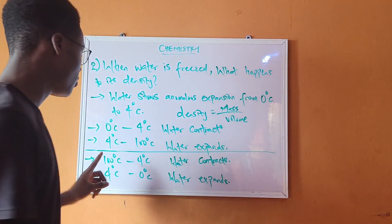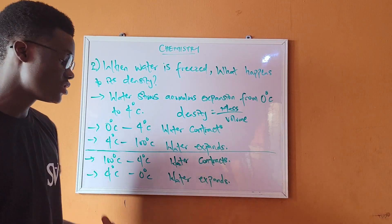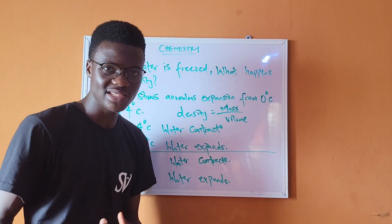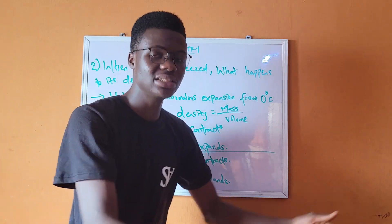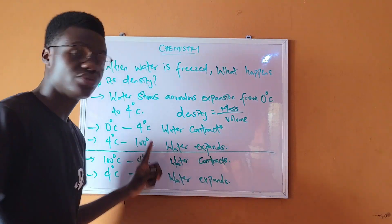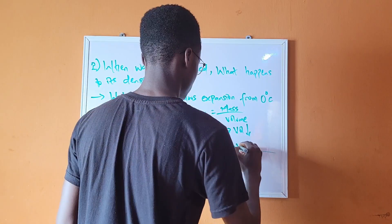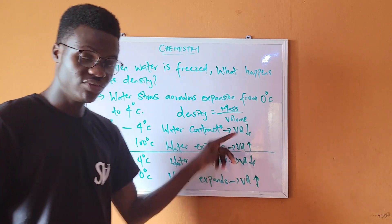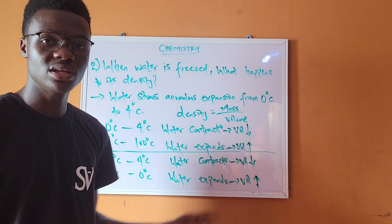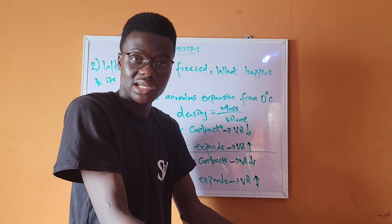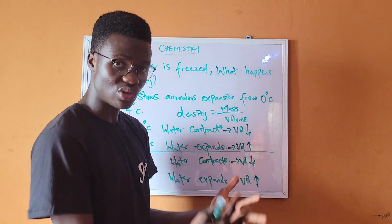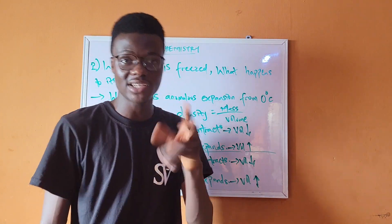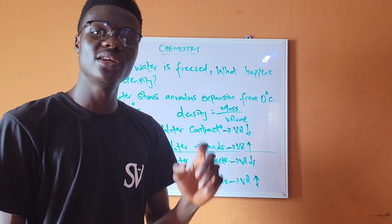From 100°C to 4°C water contracts, so its volume is decreasing. From 4°C to 0°C water expands, so its volume increases. Since volume and density are inversely proportional: when volume decreases, density increases; when volume increases, density decreases. So during cooling, density increases first, then decreases.